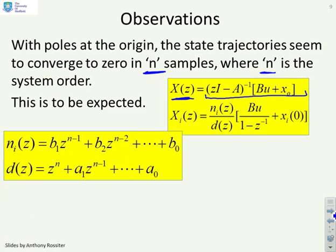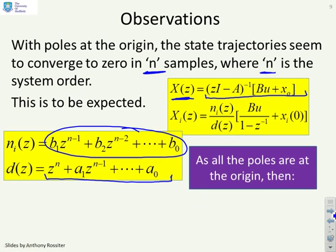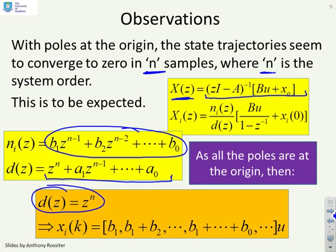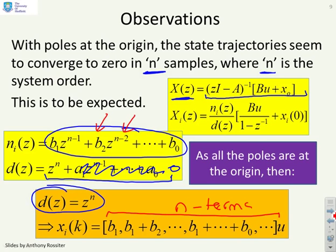zi to the minus a inverse times bu plus x of zero. You're going to get numerator terms of this form which are n minus one order and the denominator term which is nth order. But as all the poles at the origin, the denominator is just z to the n. All the other coefficients have been made zero. And therefore what you've got left with is just a numerator which has n terms, and because the numerator has n terms it takes n samples before you converge to a fixed value.